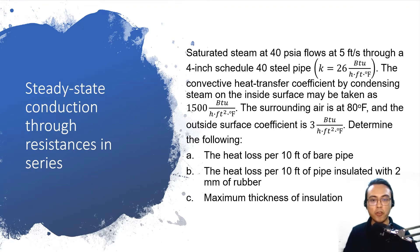Determine the following. First, the heat loss per 10 feet of bare pipe. Second, the heat loss per 10 feet of pipe insulated with 2 millimeters of rubber. And lastly, the maximum possible thickness of insulation.